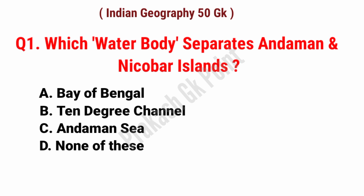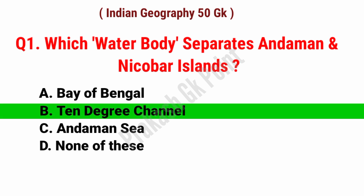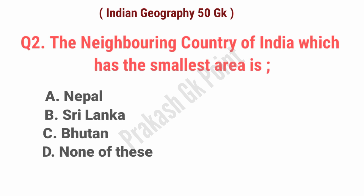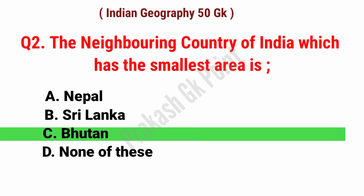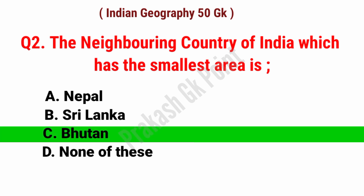First question: which water bodies separate Andaman and Nicobar Island? Answer: option B, 10 degree channel. Next question: the neighboring country of India which has the smallest area is? Answer: option C, Bhutan.